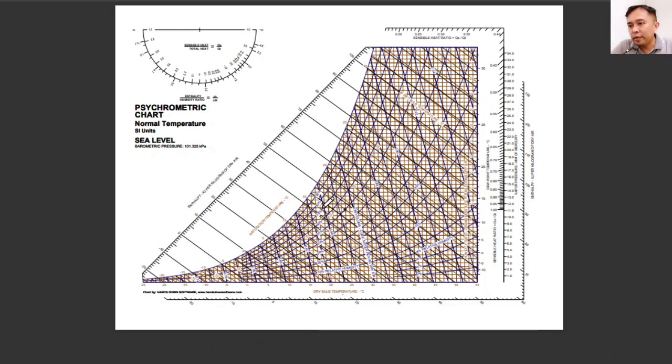In this lecture video, we will be using the psychrometric chart SI unit version at normal temperature and sea level pressure. There are six or more... I'd say we have eight properties that are reflected here in this psychrometric chart.